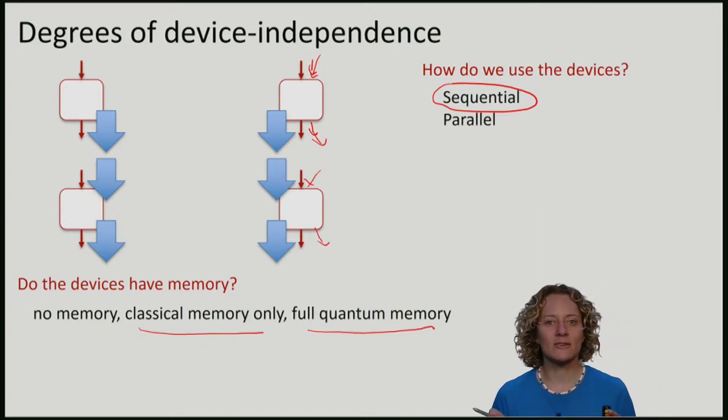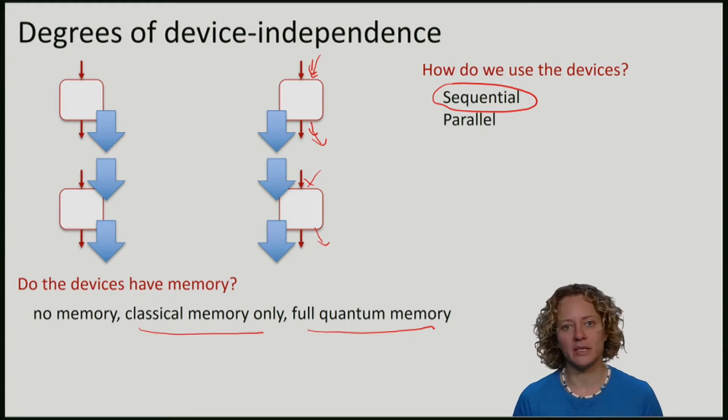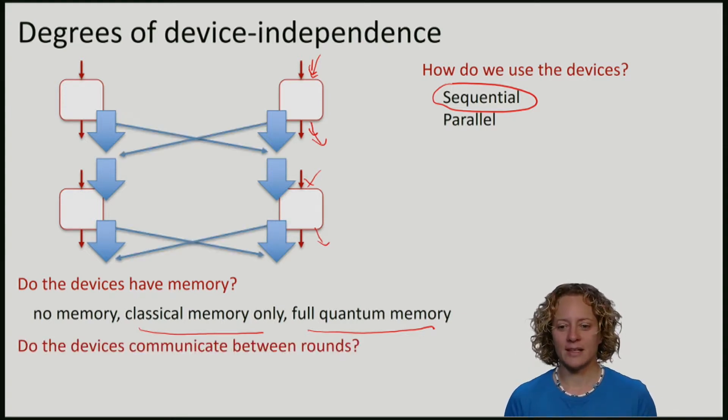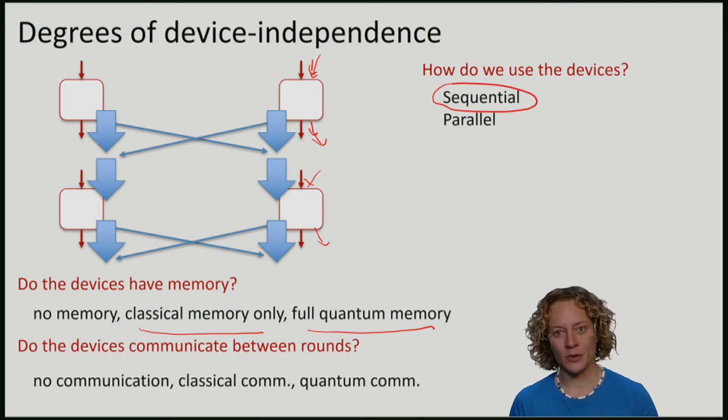You might also ask, do these devices communicate with each other in between rounds? In the simplest model, there is no communication. Or there is only classical communication. In the most paranoid scenario, there is also quantum communication. It is a very appealing model to allow full quantum communication, or in fact communication between different rounds. But of course, whether this makes sense, as a practical model, depends on whether there is a realistic concern that the devices could communicate without detection. Like in the case where they are connected by a direct fiber channel, and maybe we don't quite know what is going on in their channel.